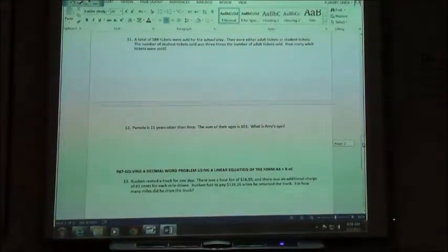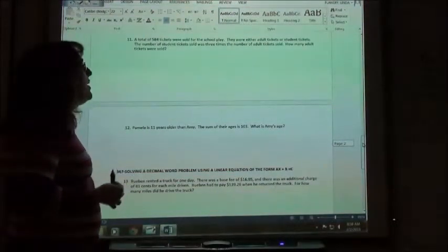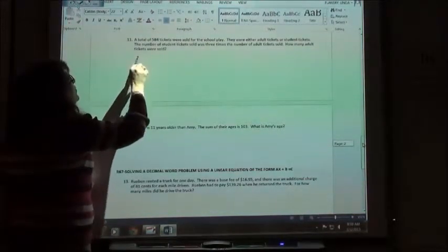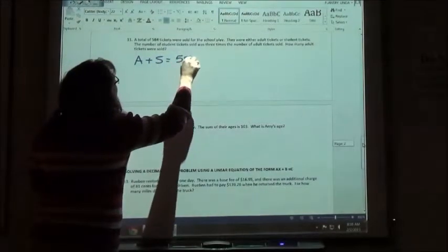Number 11, it says a total of 584 tickets were sold for the school play. They were either adult tickets or student tickets. So if I'm doing a total again, it means when you find the total, you do what? Amy, what do you do when you find the total? Add, subtract, multiply, or divide? I said find the total. Add? Add, exactly, that's what I do. So I'm going to add. My adult tickets plus my student tickets is 584 total tickets, right?